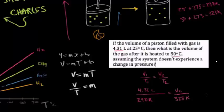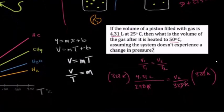So to continue solving this, we need to multiply both sides by 323 Kelvin to isolate our final volume. So times 323 Kelvin, and that's going to allow us to completely cancel out the value on this side. And so what we have is 323 times 4.31 divided by 298, and we're retaining our unit of liters.